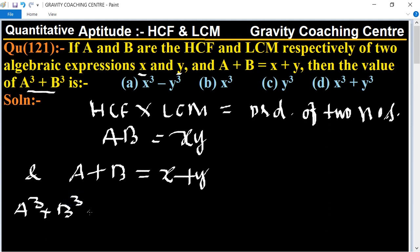Its formula is (A + B) whole power q minus 3AB and bracket of (A + B), which equals (A + B) whole power q.